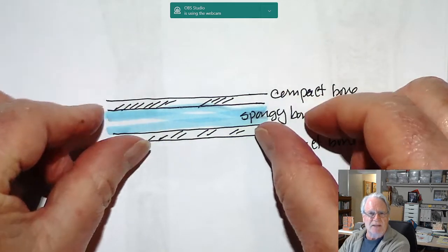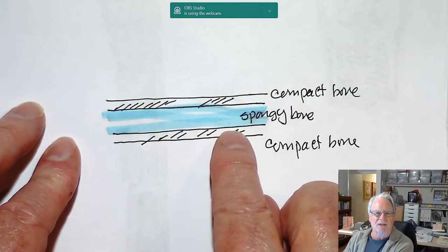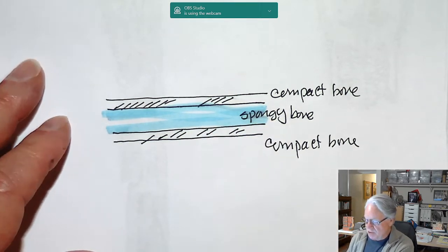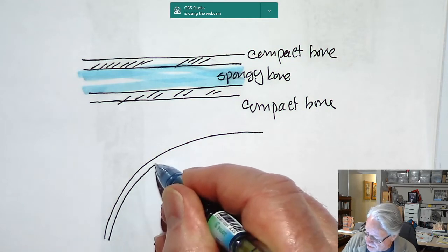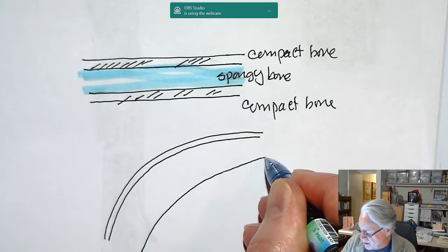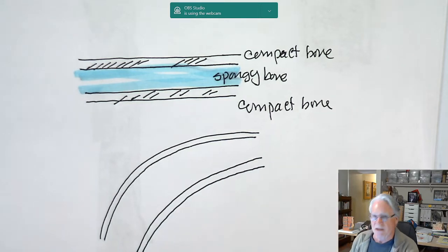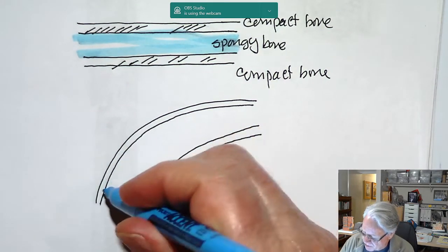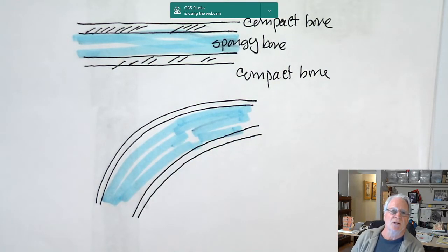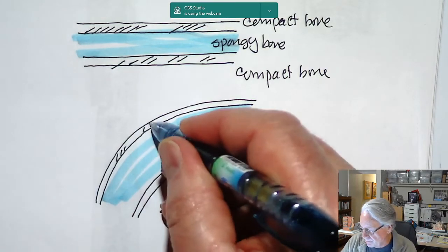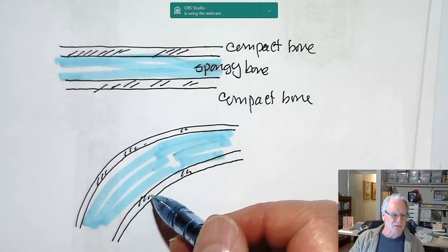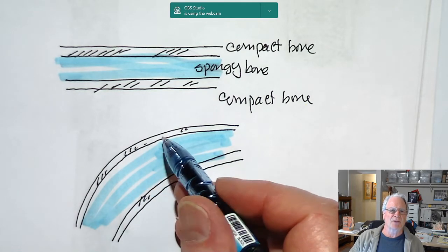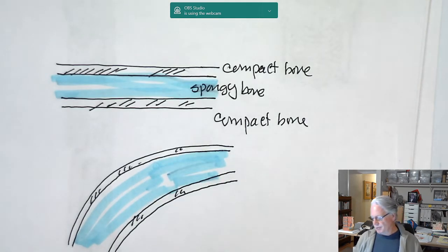If you take that flat sandwich structure and bend it into a curve, you still have the same pattern — two parallel plates of compact bone separated by a thin layer of spongy bone. That's how we can say skull bones are flat bones, because they have that pattern: two thin plates of compact bone separated by a small amount of spongy bone.